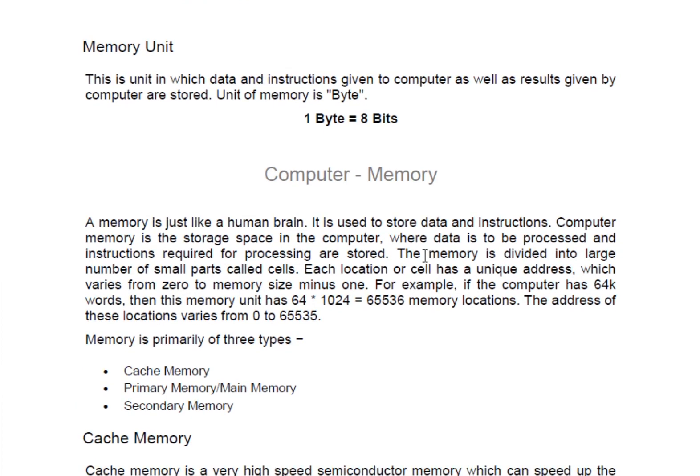Now, the memory unit. First of all, we need to understand what memory is. Memory actually gives the computer its remembrance power — it means it allows us to store data in a computer. The smallest unit of a computer is a bit. A bit is either 0 or 1, where 1 is true and 0 is false. One byte equals 8 bits.